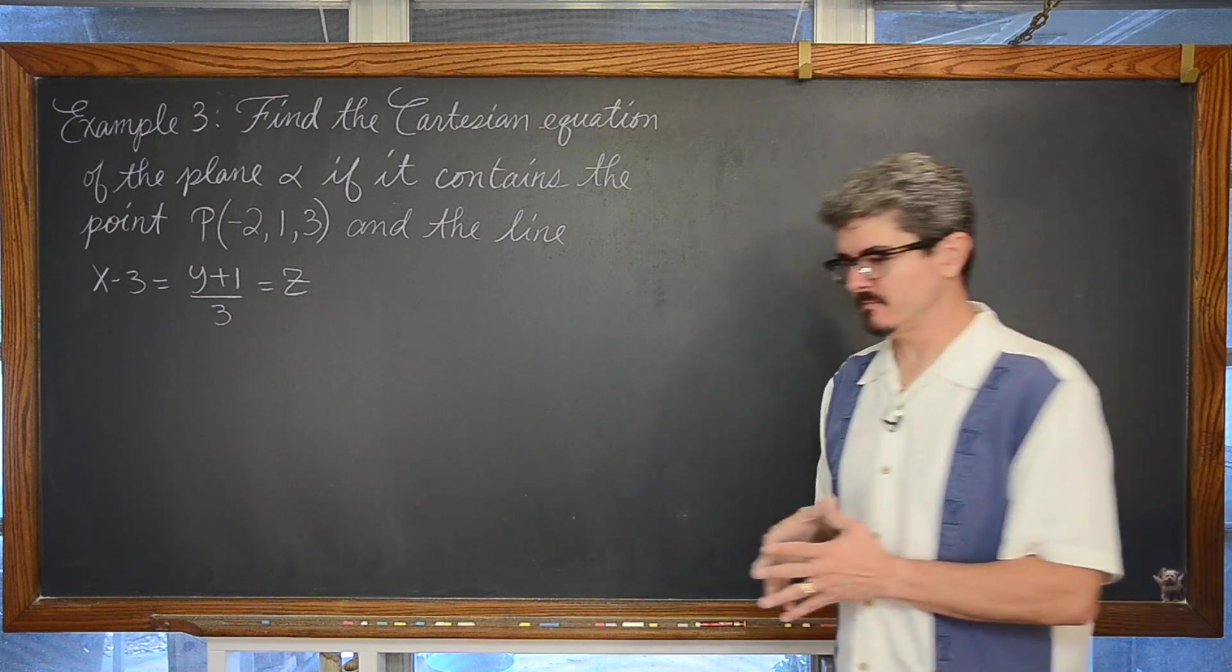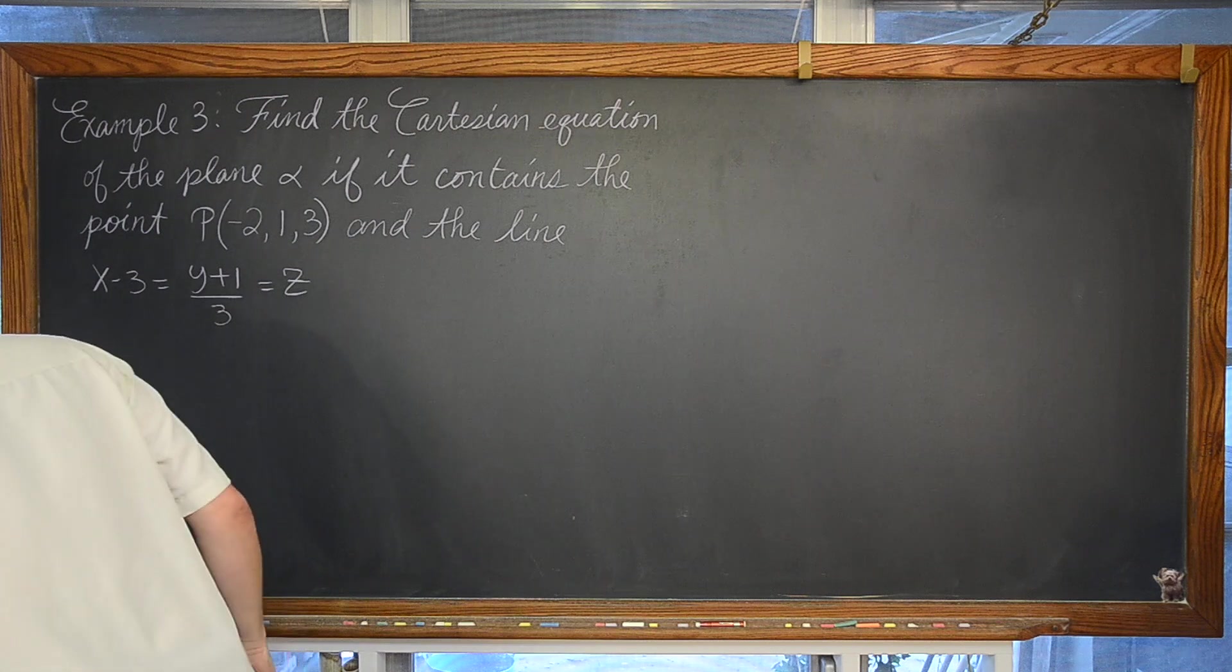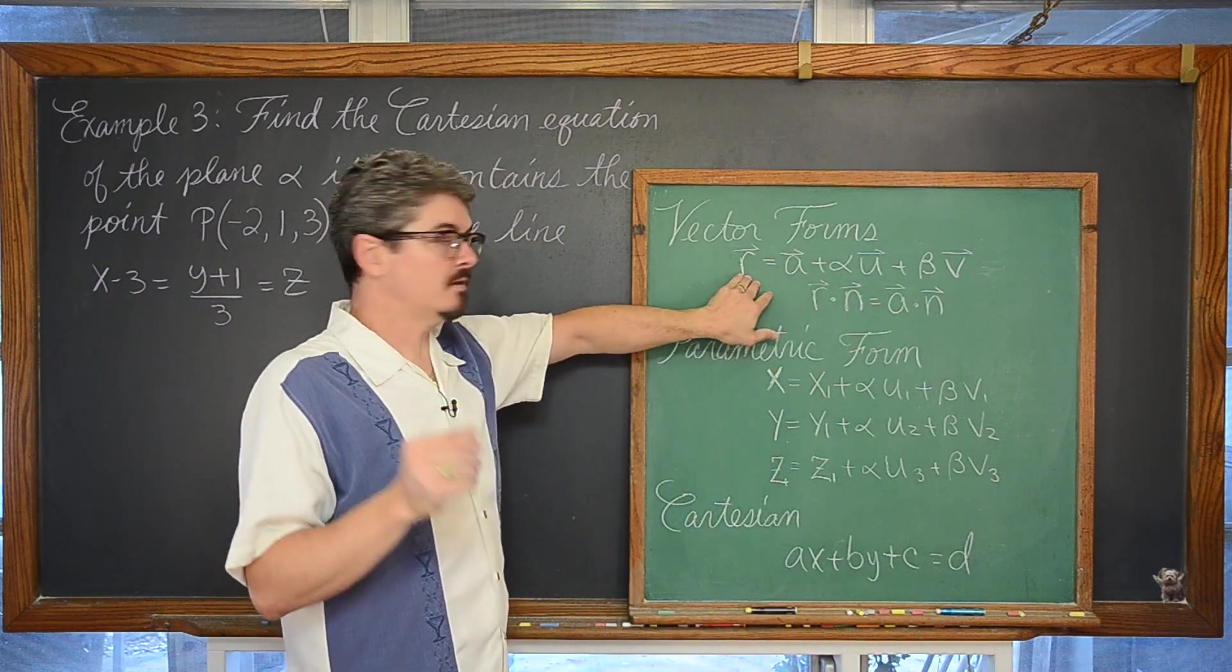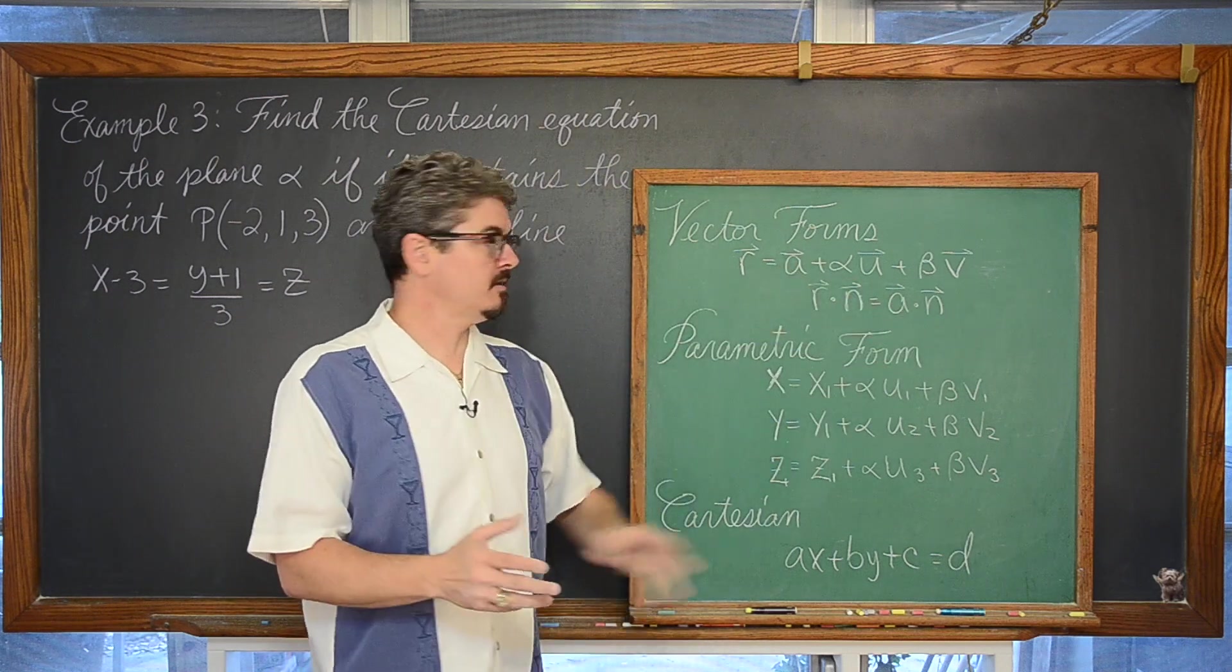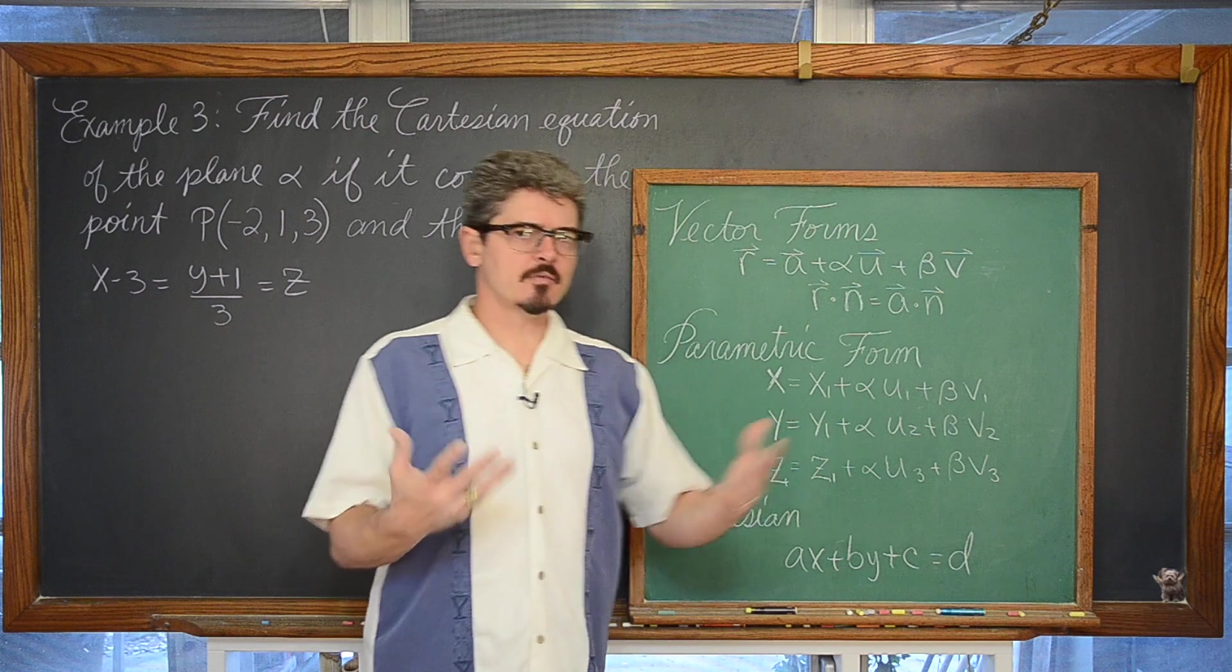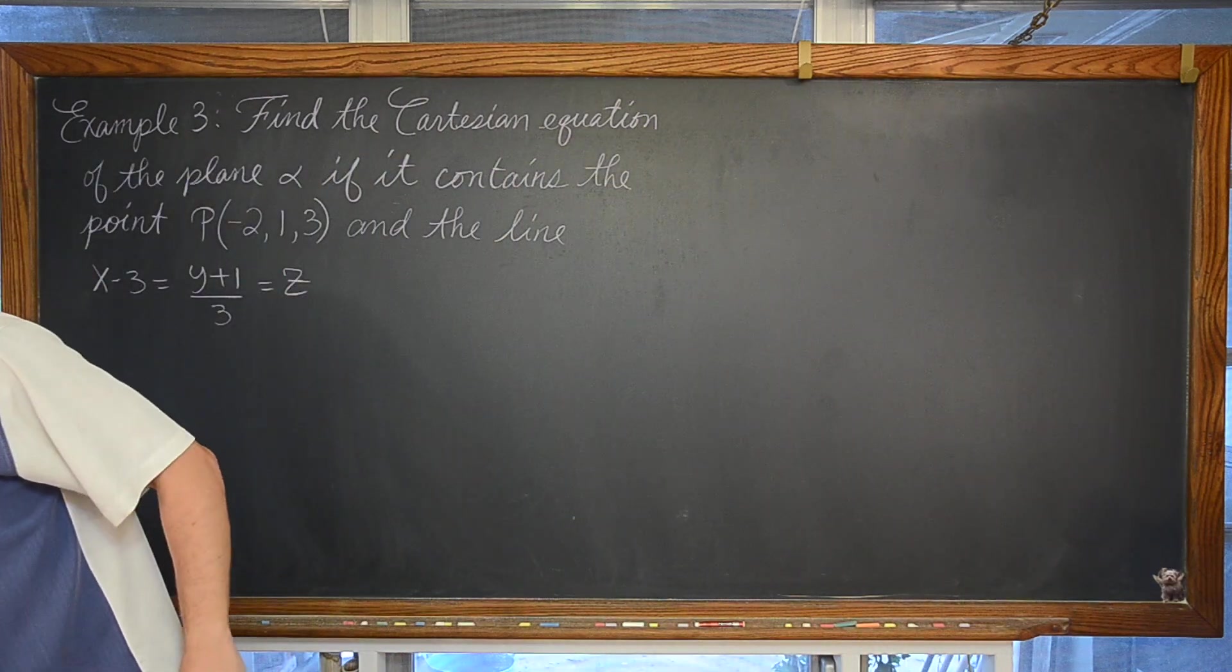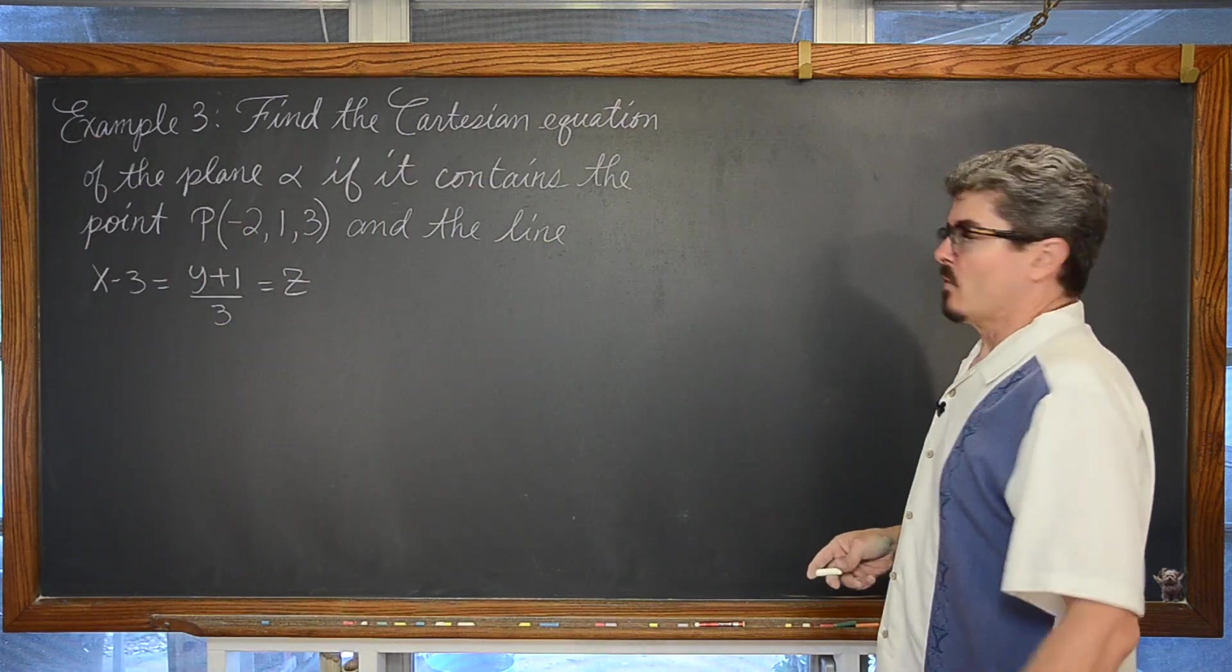What do you need to write the equation of a plane? Whether you are going to go into Cartesian form or not, you need a point on the plane described with this position vector and you need some kind of gradient. Whether that gradient is two vectors which are parallel to the plane or you are using a vector which is orthogonal. We are going to do the orthogonal one in this video since we just used both methods in our last example.